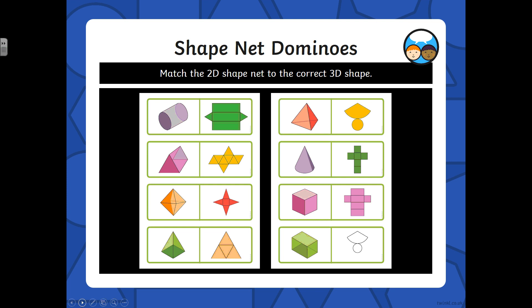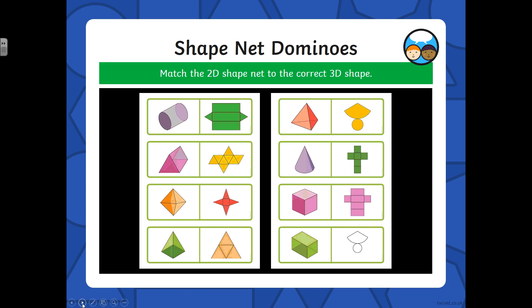This might help you match the 2D shape net to the correct 3D shape. I don't know if I saved this sheet. If I haven't, then you can download it from the Twinkle page, but we don't really need to worry about that too much.